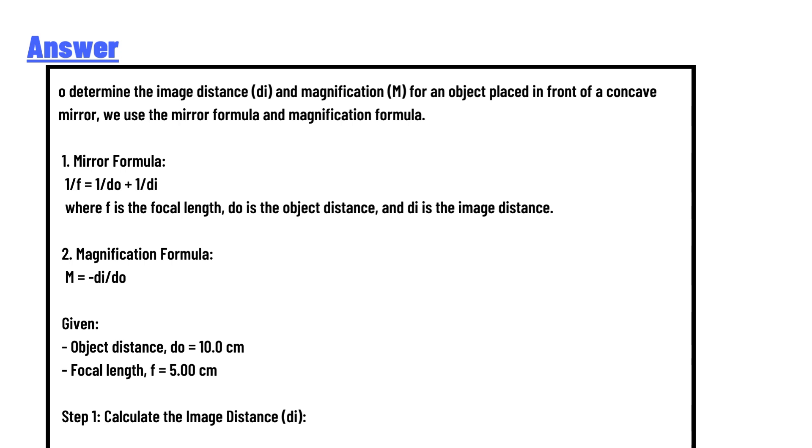Mirror formula: 1/f = 1/do + 1/di, where f is the focal length, do is the object distance, and di is the image distance. Magnification formula: m = -di/do. Given: object distance do = 10 cm, focal length f = 5 cm.